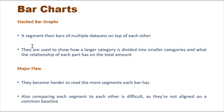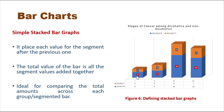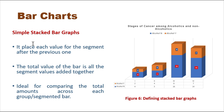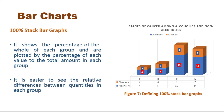Stacked bar graphs segment their bars of multiple data sets on top of each other. They are used to show how a larger category is divided into smaller categories and the relationship of each part to the total. A major flaw is they become harder to read the more segments each bar has. Comparing each segment to others is also difficult since they are not aligned on a common baseline — the orange and blue portions sit on top of each other.